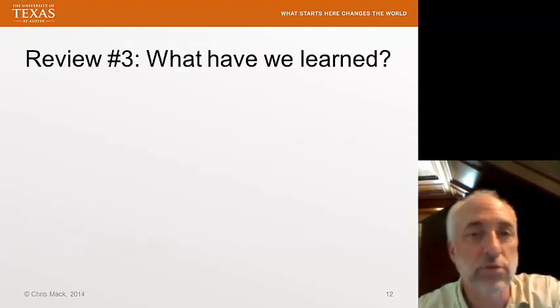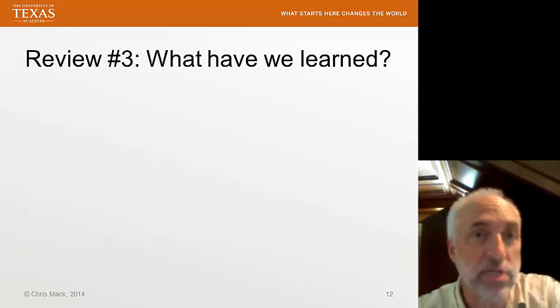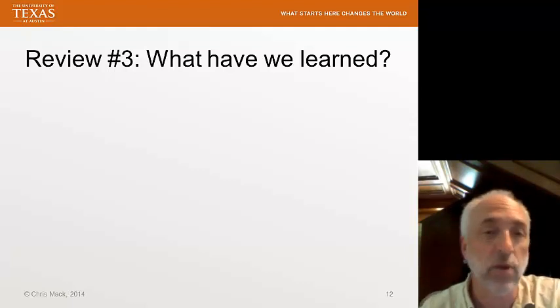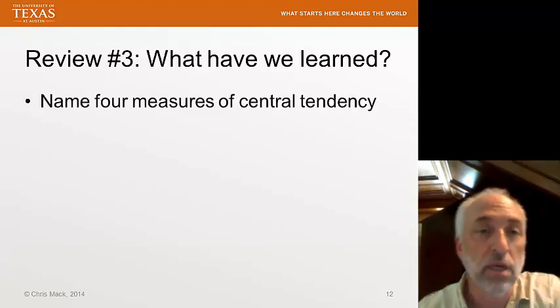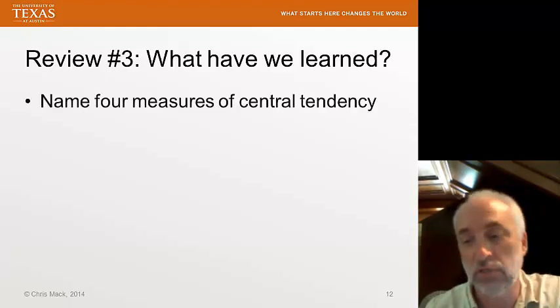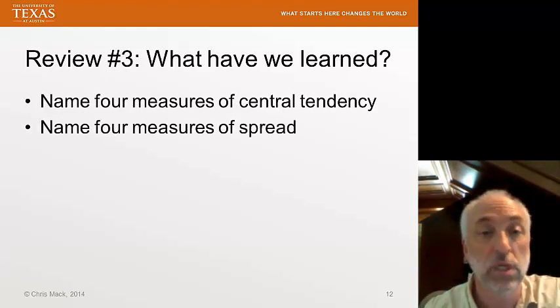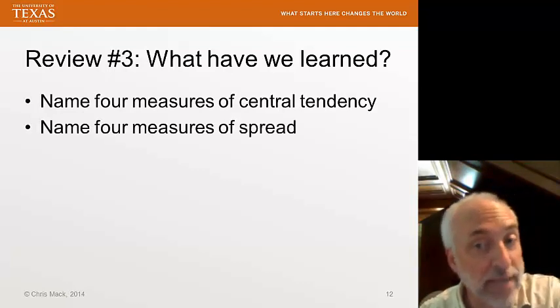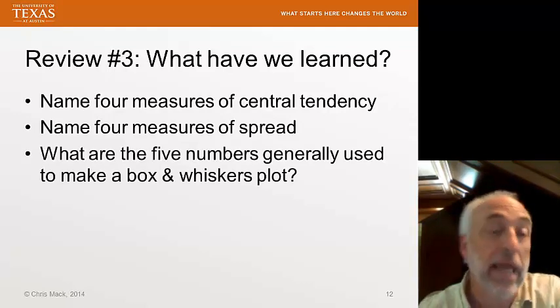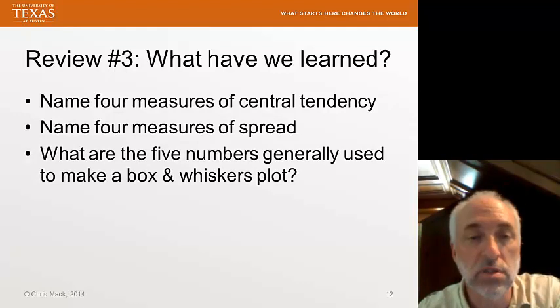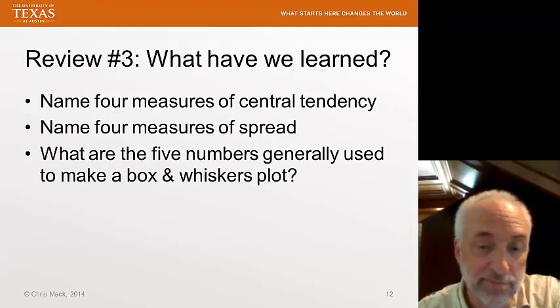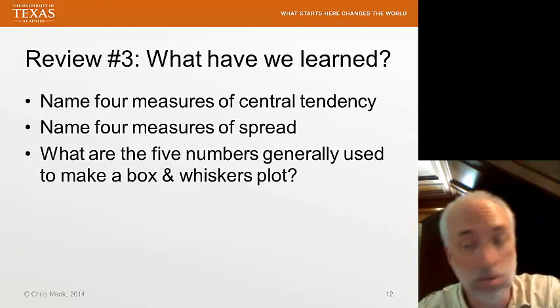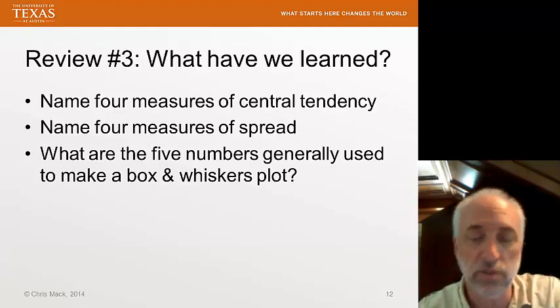All right. Let's review lecture number three, our second part in a two-part series on descriptive statistics. What have we learned? As always, you should be able to quickly and easily answer these questions. If not, go back and review the material. Name four measures of central tendency. Name four measures of spread. And what are the five numbers generally used to make a box and whiskers plot? That is, what are the five numbers in the five-number summary? Well, that's our lecture second part on descriptive statistics. We'll see you next time.